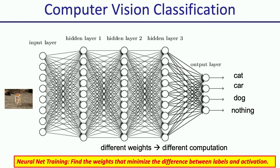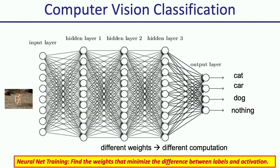In computer vision classification, typically what happens is you have a large neural network. An image goes in, gets processed layer by layer, and out comes a decision of what's in the image. You'd hope the neural network would say 'dog.' The way it makes decisions is by each individual neuron making a small contribution — taking in some inputs, processing them, and generating an output. Each individual neuron can't do much, but if you have a large enough network, together these neurons can make a decision that is often correct.